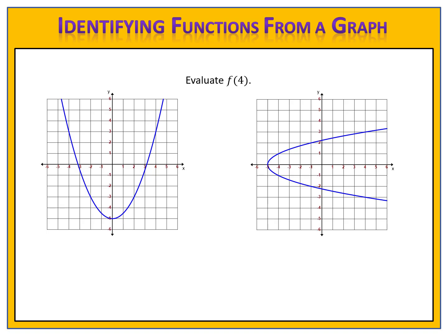With the first graph, we go over to the input axis, which is x. We go over to the input of 4, find the point on the graph, and then go across to find the output. When the input is 4, the output is 3, so f equals 3.